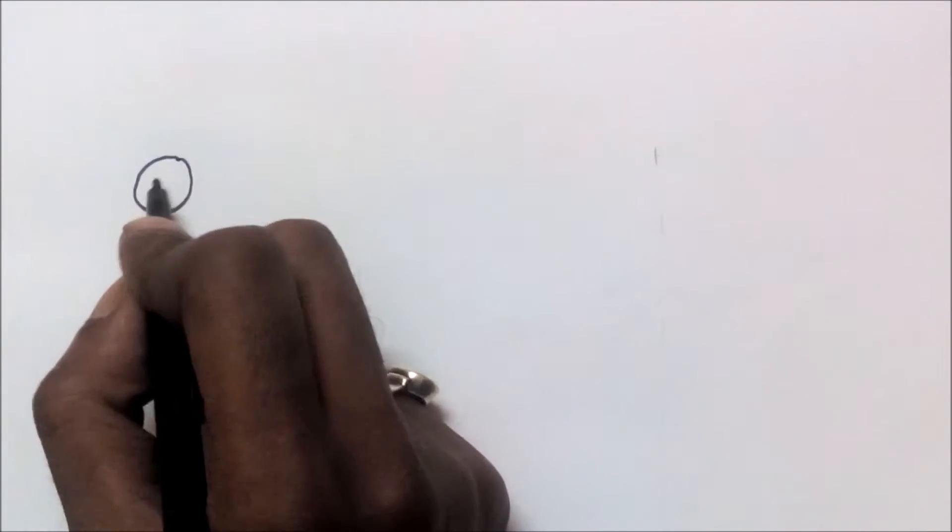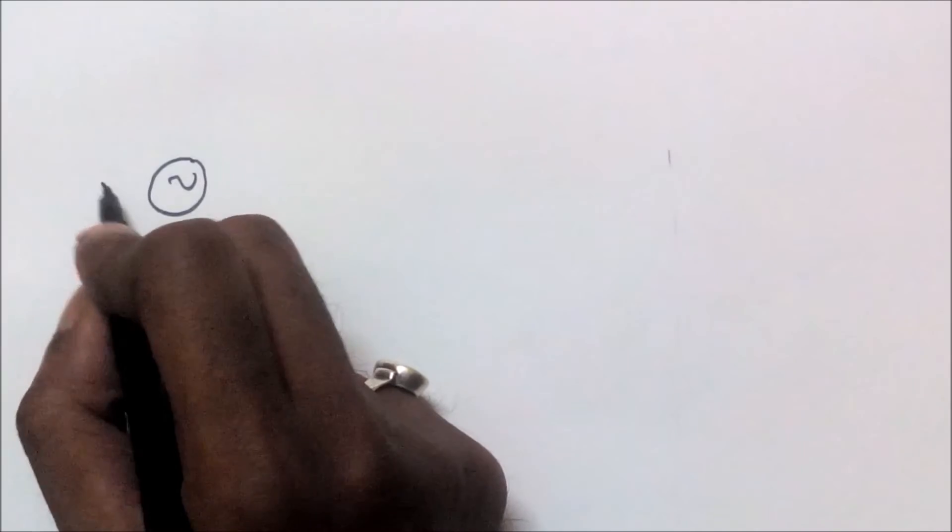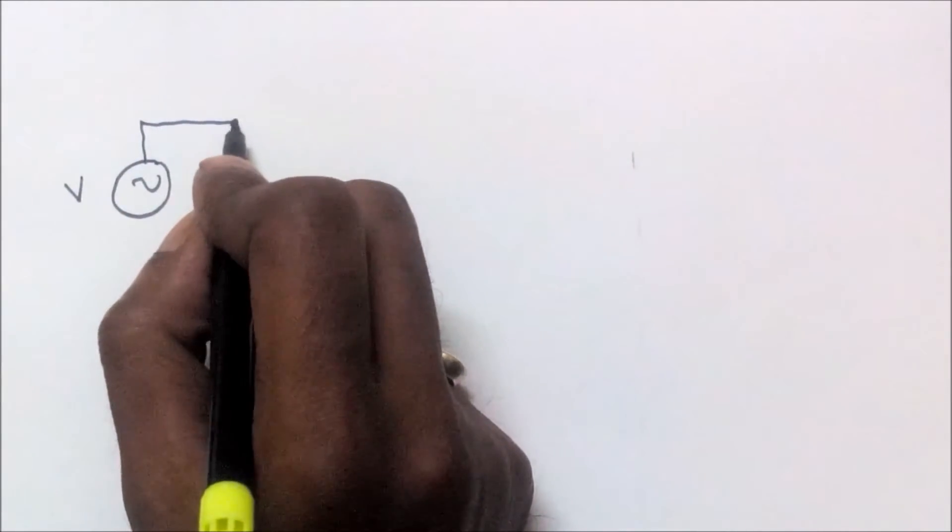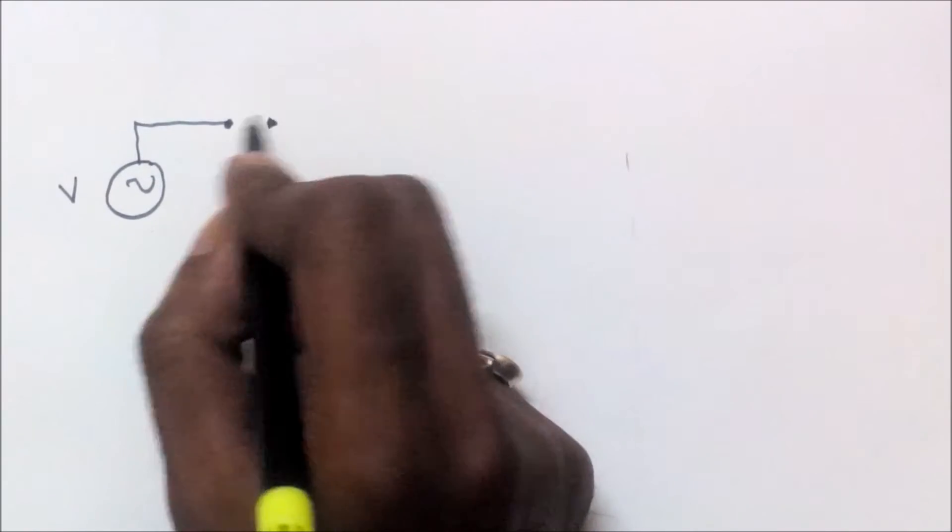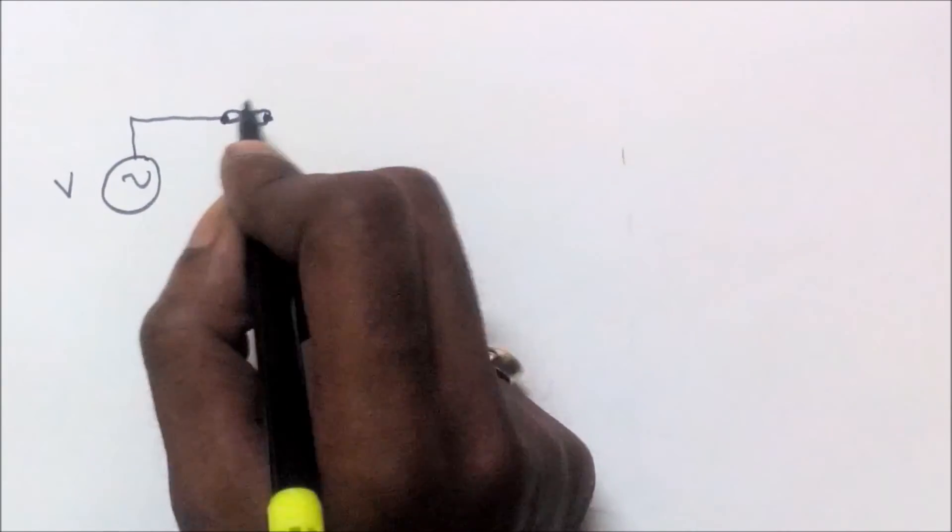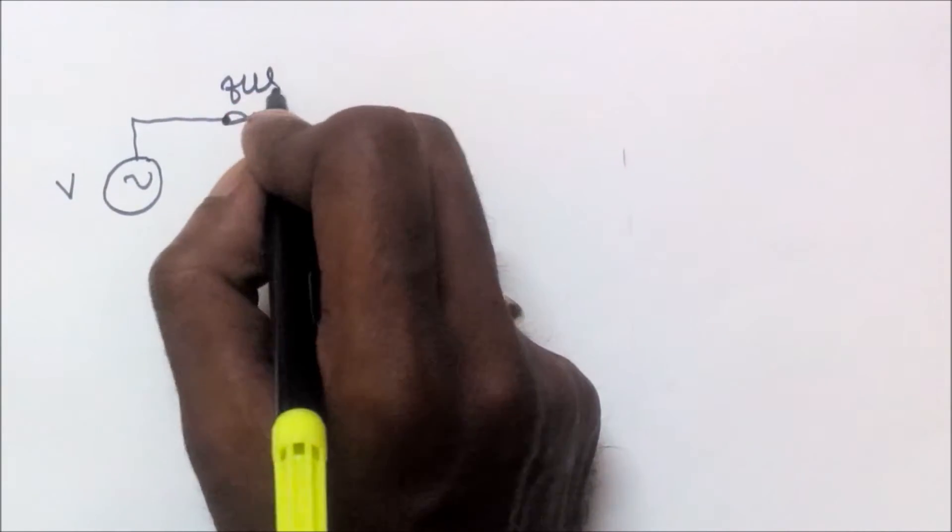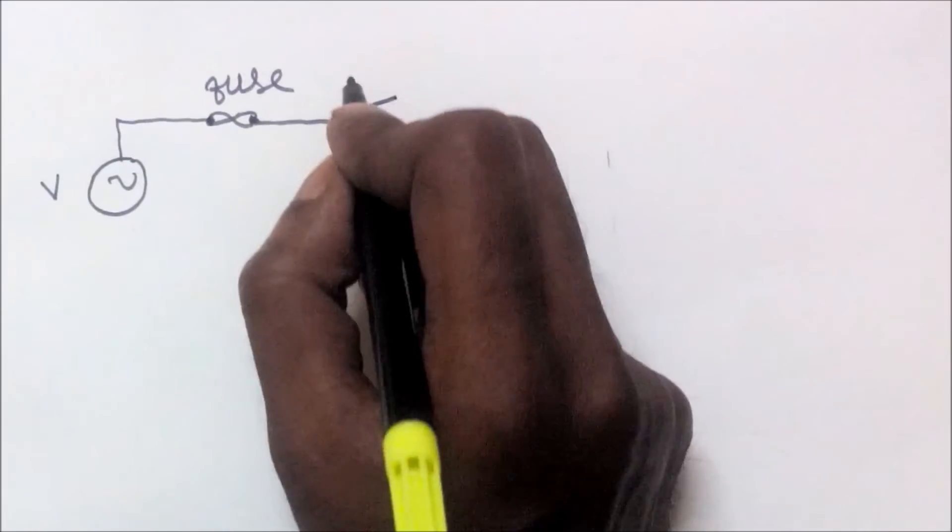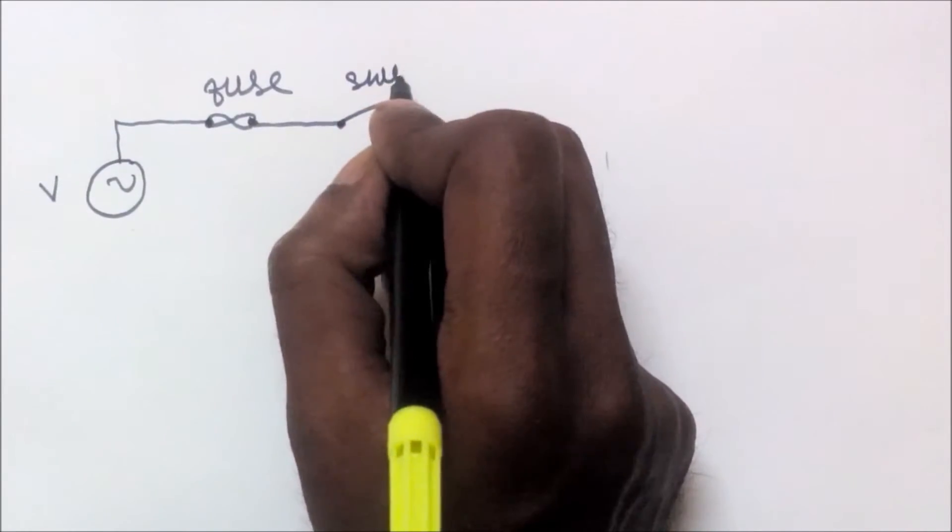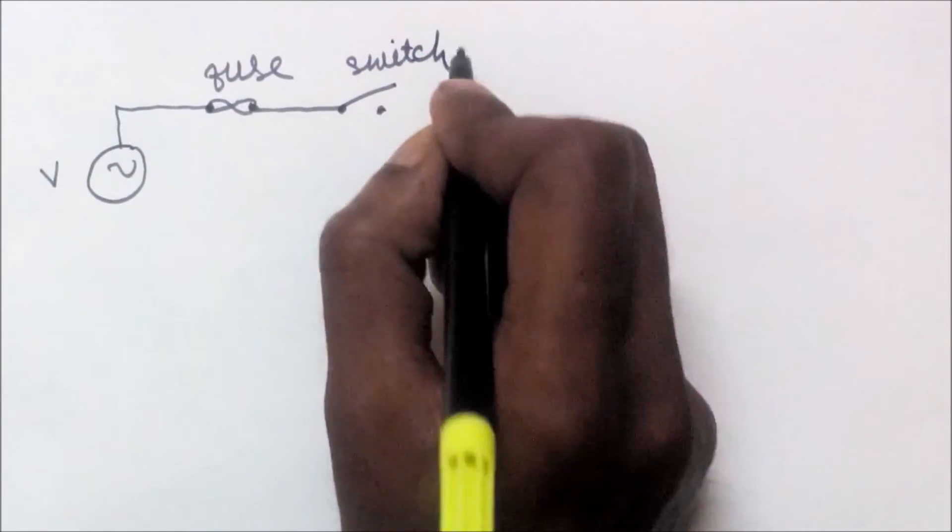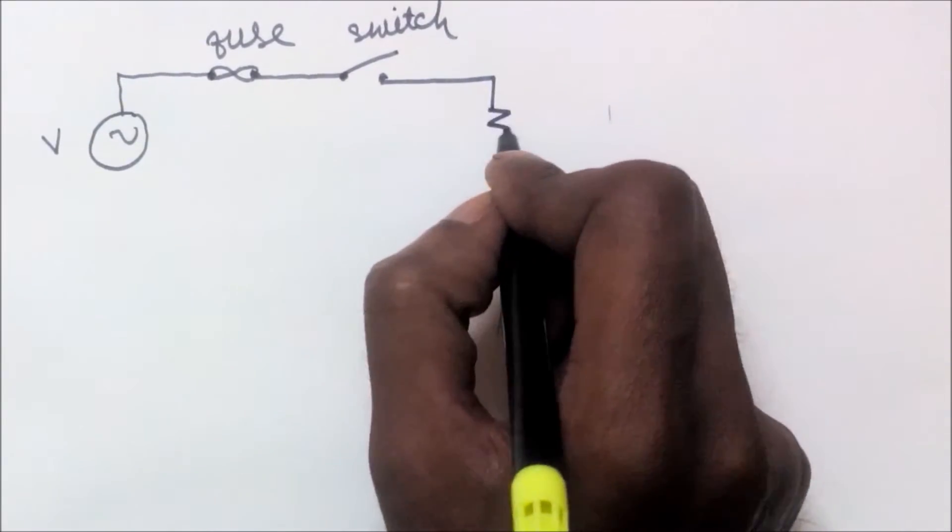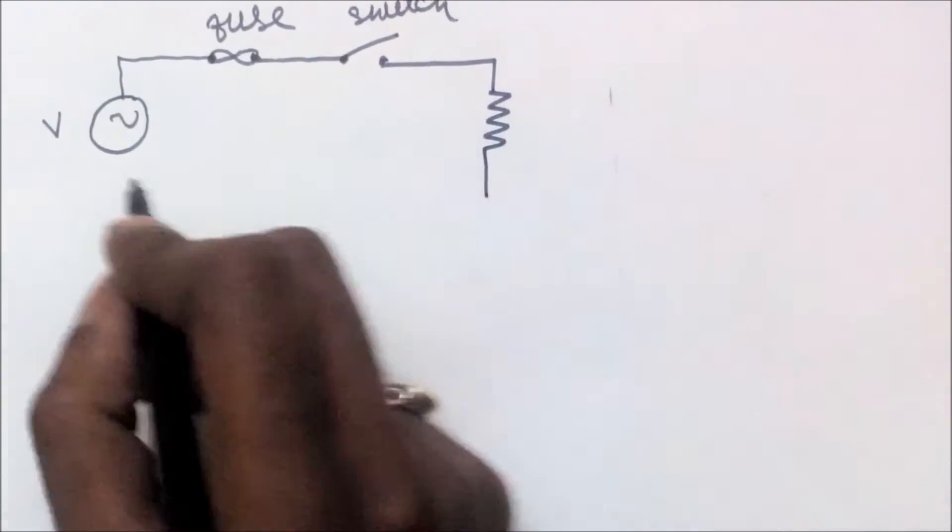For example, this is our voltage source, sinusoidal in nature. This is our protecting device, that is, the fuse. This is our controlling device, that is, the switch. And this is our load.